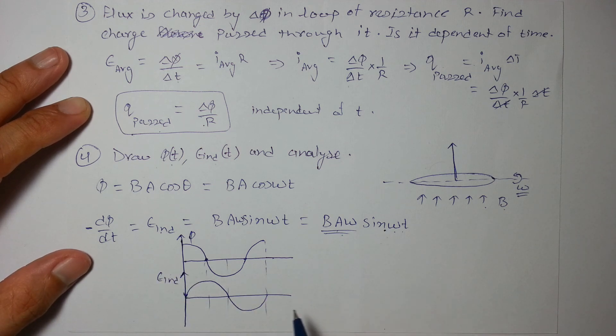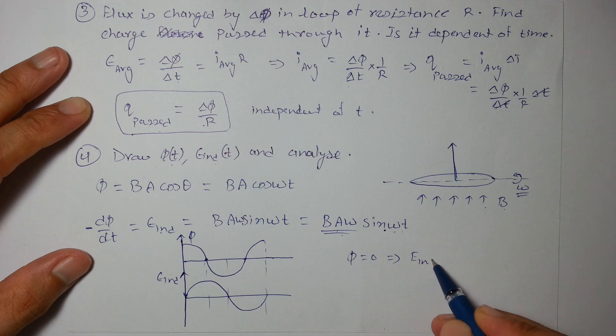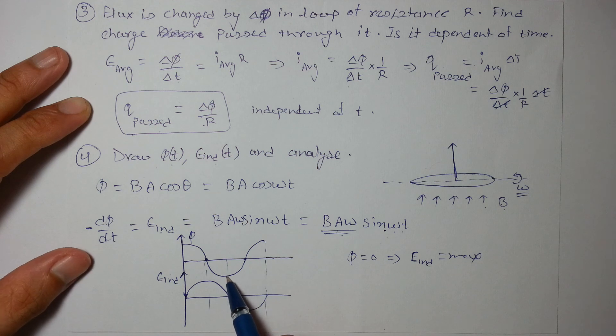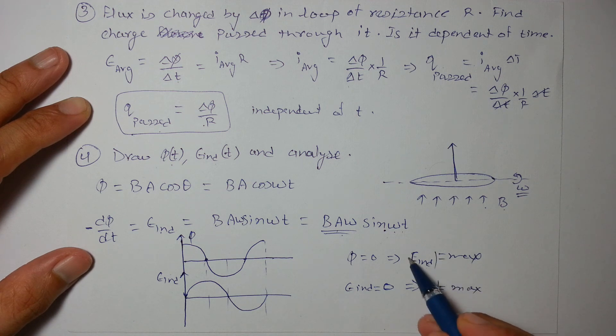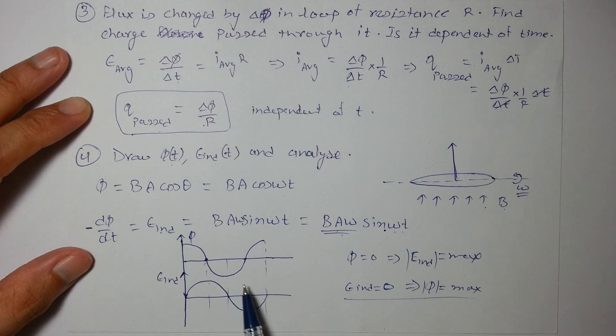So the important point is to be noticed: when phi is 0, EMF induced is maximum. When EMF induced is 0, flux is maximum in value. Magnitude of flux is maximum. We are talking about magnitudes. So when one is 0, another is maximum. When another is 0, one is maximum. This is an important point to be noted.